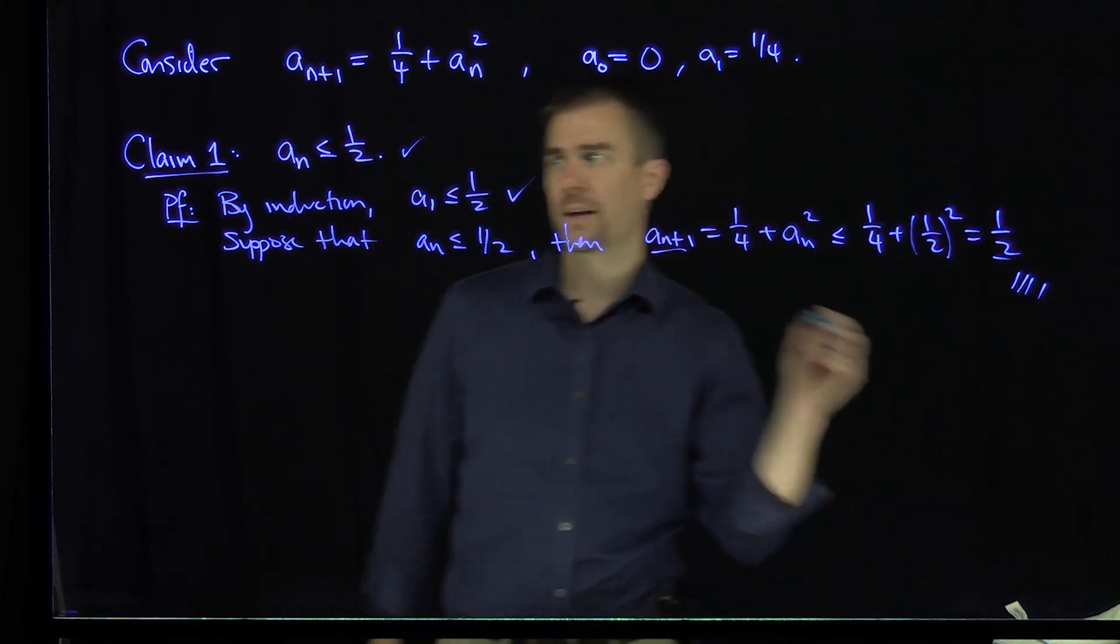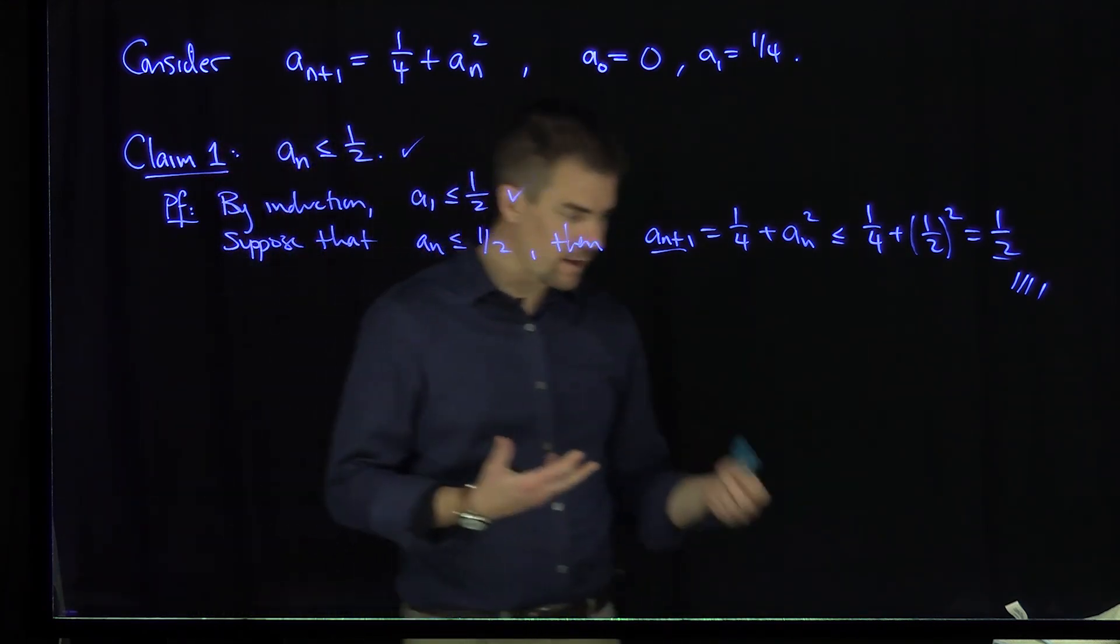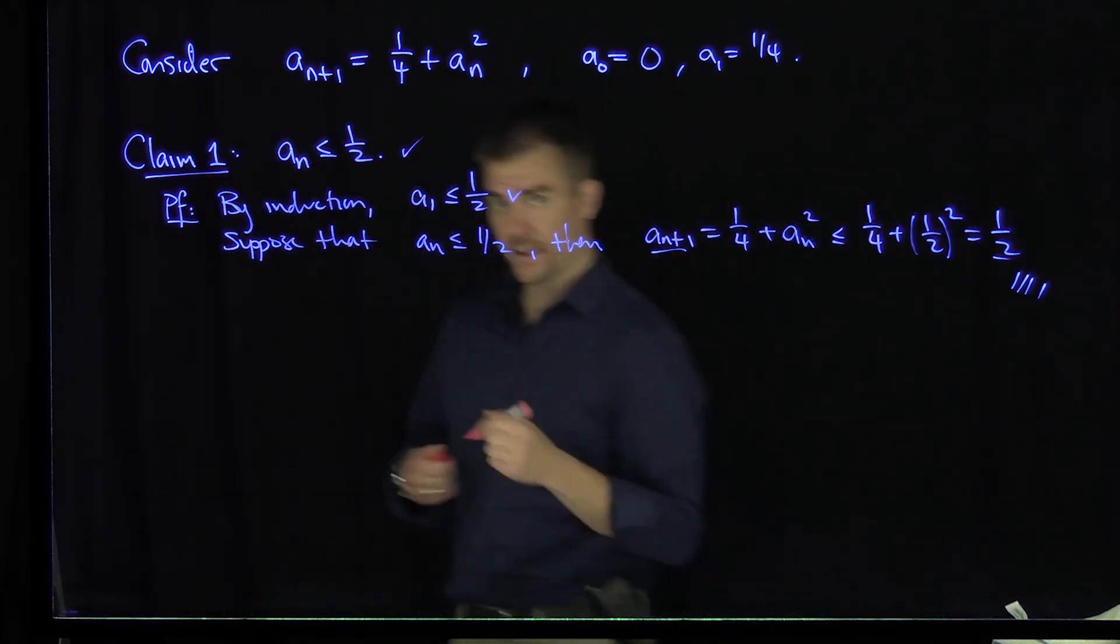So the first claim is that our sequence is bounded. Our sequence is bounded by 1/2. And now let's determine if there's some monotonicity that's involved in our sequence.